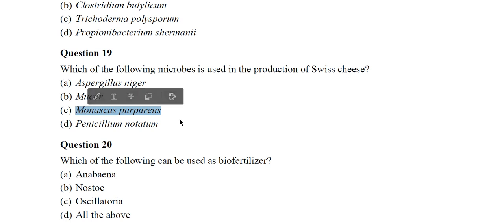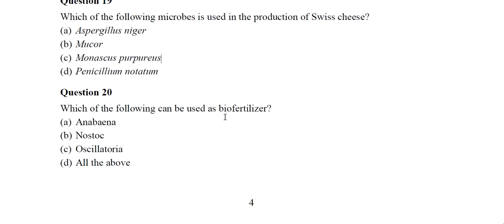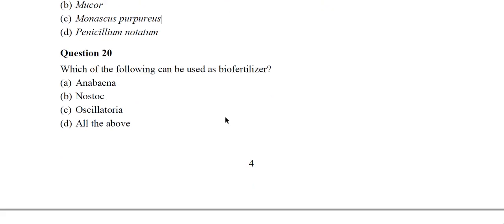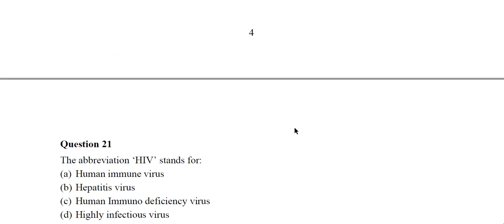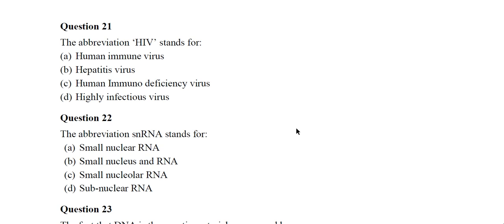The correct answer for Swiss cheese is Monascus purpureus, although there is some doubt about this question. Question 20: Which of the following can be used as a biofertilizer? Option D, all of the above — that means Anabaena, Nostoc, and Oscillatoria are all useful as biofertilizers.